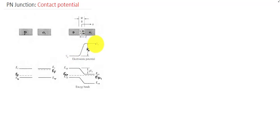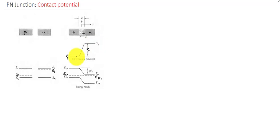VN is the constant electrostatic potential existing on the N side, and VP is the electrostatic potential existing on the neutral P side — it is also a constant potential. The electrostatic potential difference between the N side and P side is known as the contact potential V0. This contact potential is also known as the built-in voltage or barrier potential.